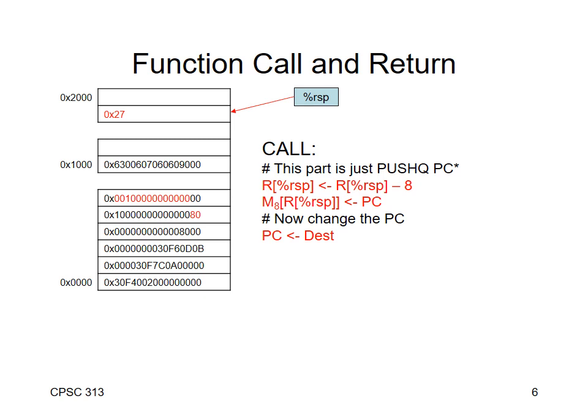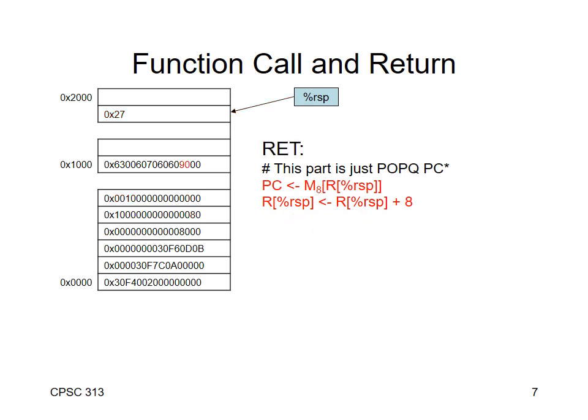Now that the return address is pushed, we change the program counter to execute the sum function, starting at address 1000. Eventually we get to the return. The place we want to return to is on the stack, so we pop that value off the stack and put it into the program counter. We move the value from the stack into the PC — that says the next instruction we're executing is the one we came from — and we increment the stack pointer so it points to the next location on the stack.